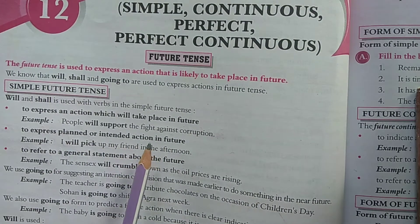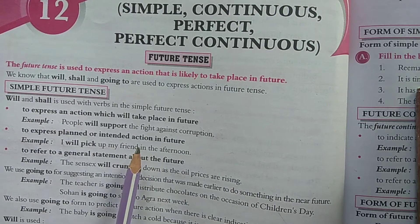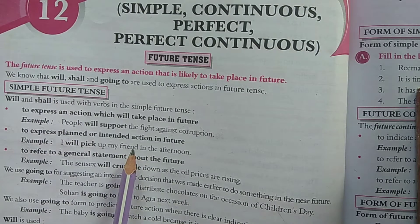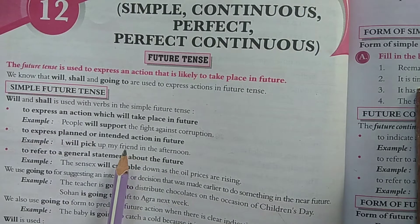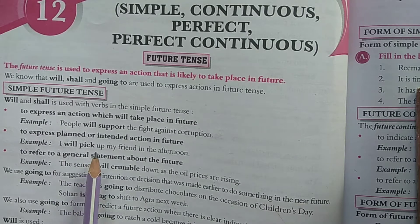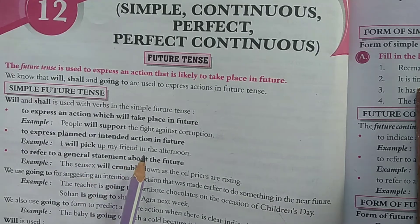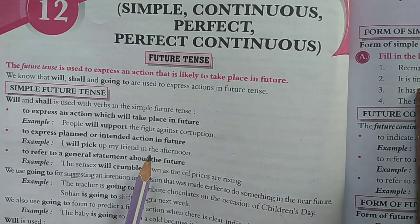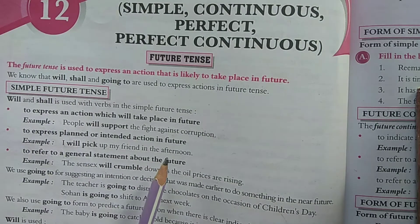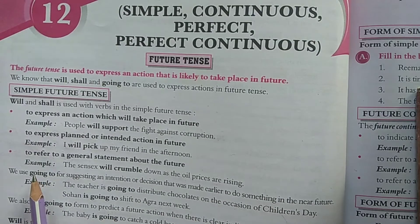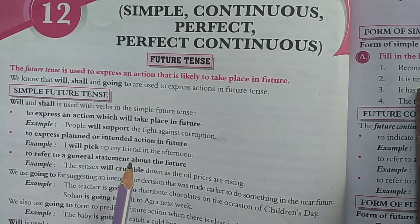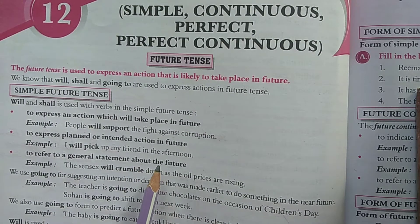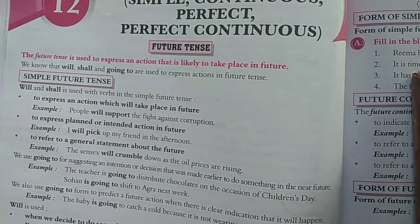The simple future can also be used to express a planned or intended action in the future. For something which we plan for the future, we also express it in the simple future. For example: 'I will pick up my friend in the afternoon.' It is decided; we have planned it, so the person can use this expression.